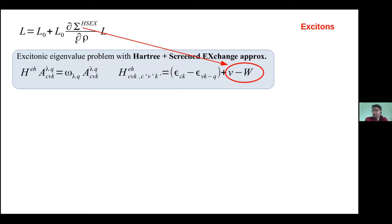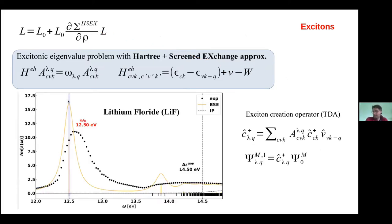A few details on the Bethe-Salpeter equation. The kernel entering the Dyson equation is composed of two terms: an exchange term for the electron-hole, and an interaction term. We can recast this Dyson equation as an excitonic Hamiltonian, giving an eigenvalue problem we can solve. From this, we obtain absorption spectra including excitonic peaks. In this example — lithium fluoride, a prototype wide-gap insulator — there is a strongly bound exciton with a binding energy of about two electron volts. We can define an excitonic creation operator, at least in the Tamm-Dancoff approximation, and from this we can think about having a state which describes the system out of equilibrium if we create an exciton.